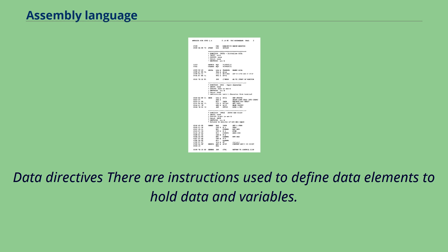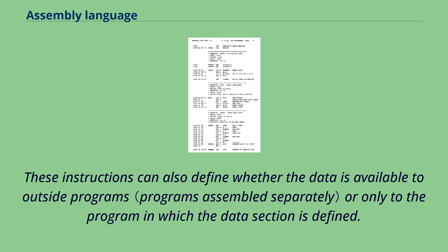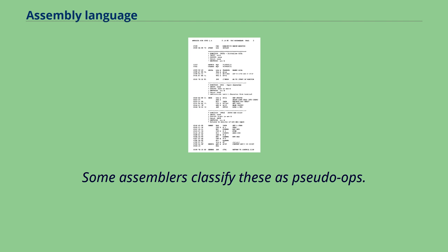Data directives are instructions used to define data elements to hold data and variables. They define the type of data, the length and the alignment of data. These instructions can also define whether the data is available to outside programs or only to the program in which the data section is defined. Some assemblers classify these as pseudo-ops.